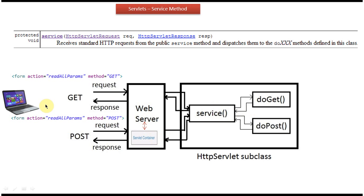Suppose the client is sending a POST request. It reaches the web server, which forwards the POST request to the Servlet container. The Servlet container dispatches the POST request to the service method. The service method decides whether to call doGet or doPost. Since the request is a POST request, the service method will call the doPost method. The doPost method processes the request and sends the response back to the service method.